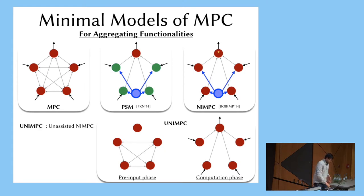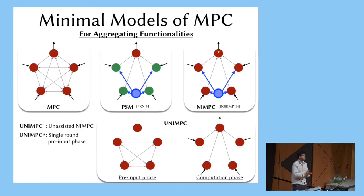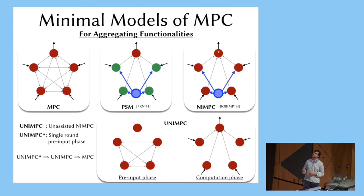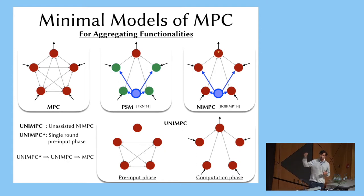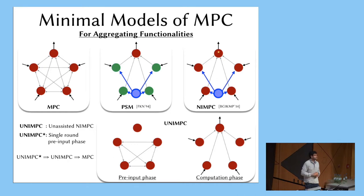Our most minimal model is what we call UNIMPC*, where in the pre-input phase, the parties send a single message to each other over private channels, and then they get the inputs and send a single message to the output player. Why are these models relevant to the feasibility question in MPC? If you show a UNIMPC* protocol, it's automatically a UNIMPC protocol, which is automatically an MPC protocol. So the security notion and communication pattern are consistent with the corruption model — a protocol secure in either of these models is also an MPC protocol.